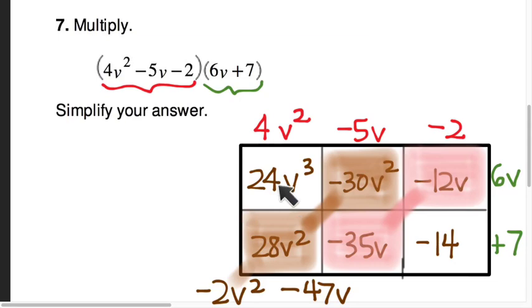And then I have this pair of terms that doesn't have a match, 24v³ and -14. And there it is. So by adding together the like terms that are in my lattice, I get my simplified answer.